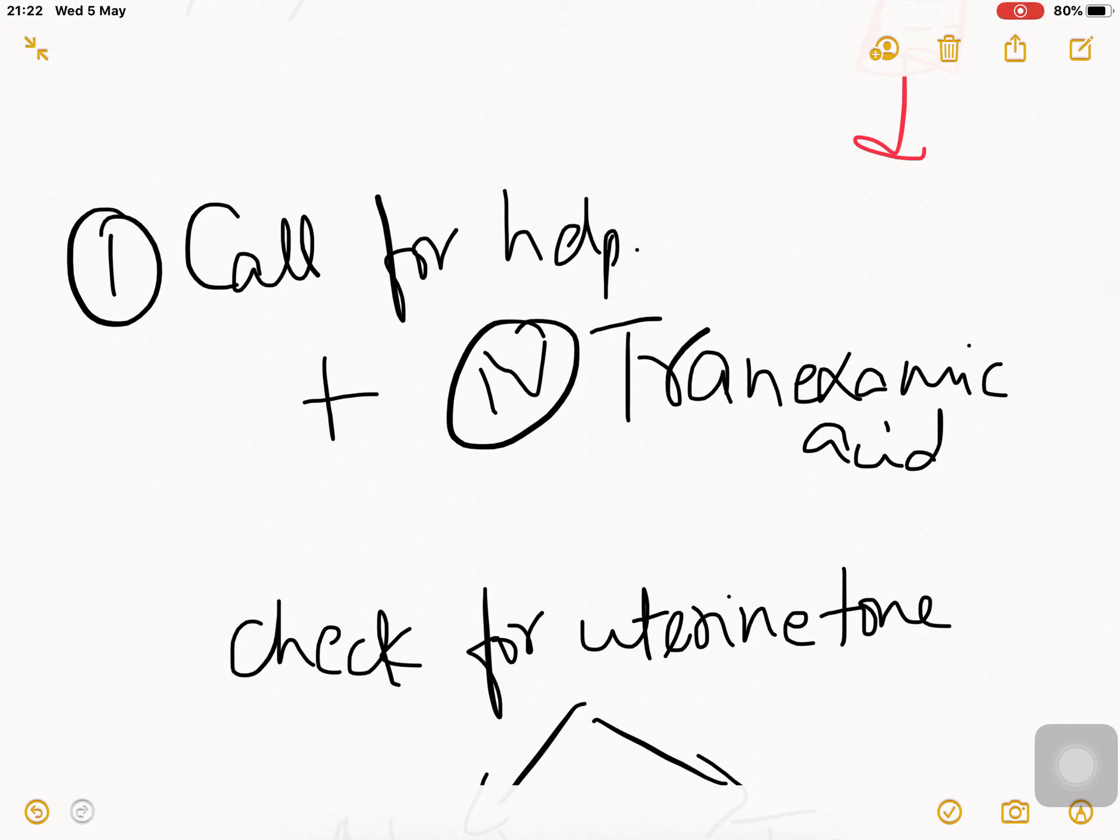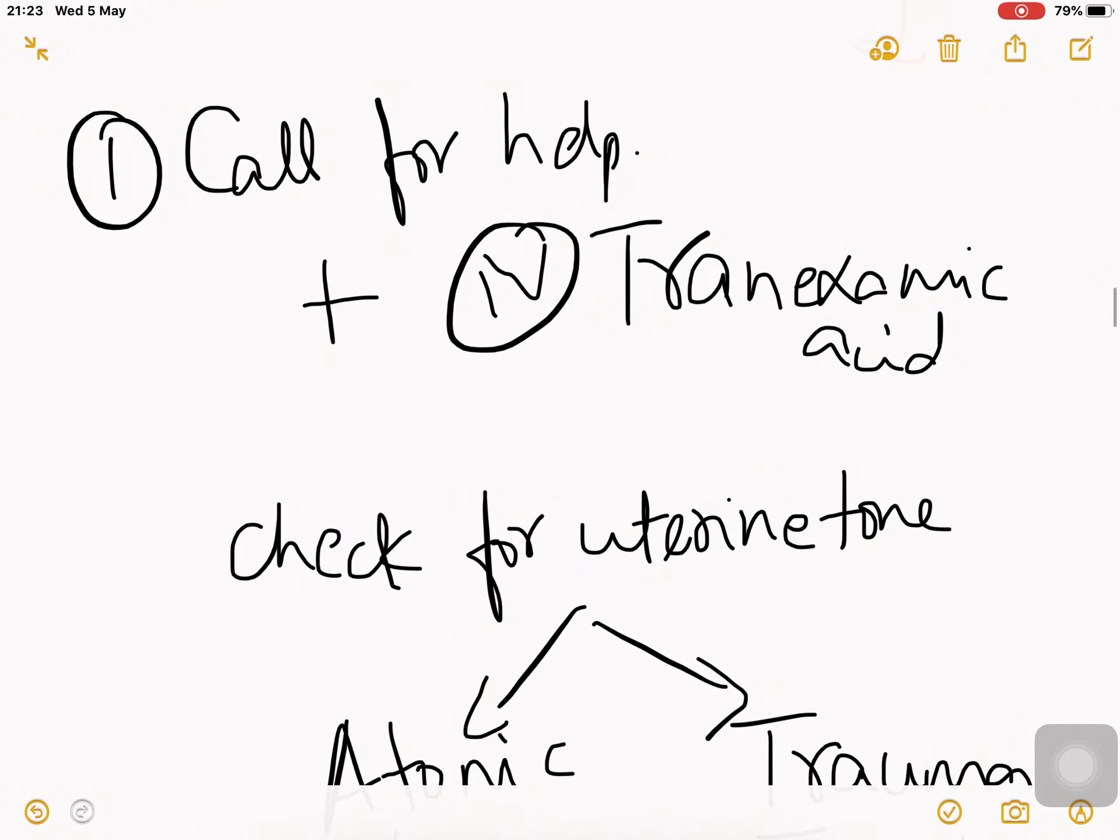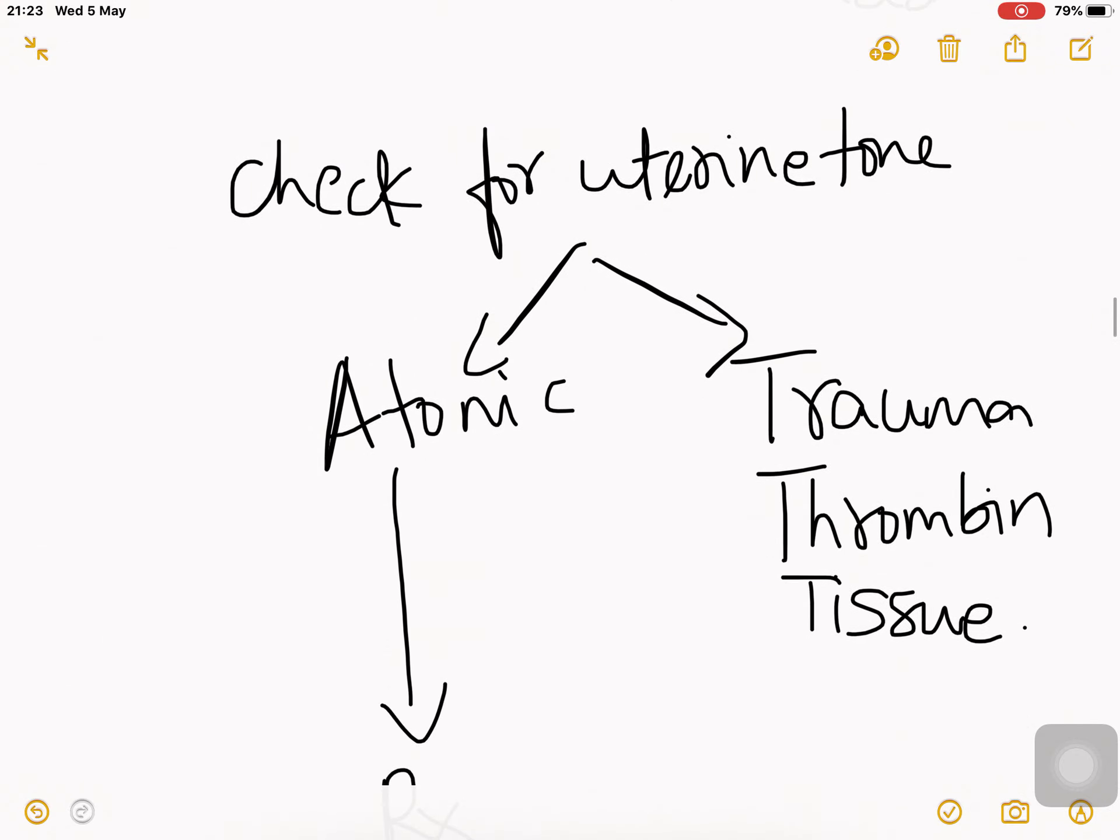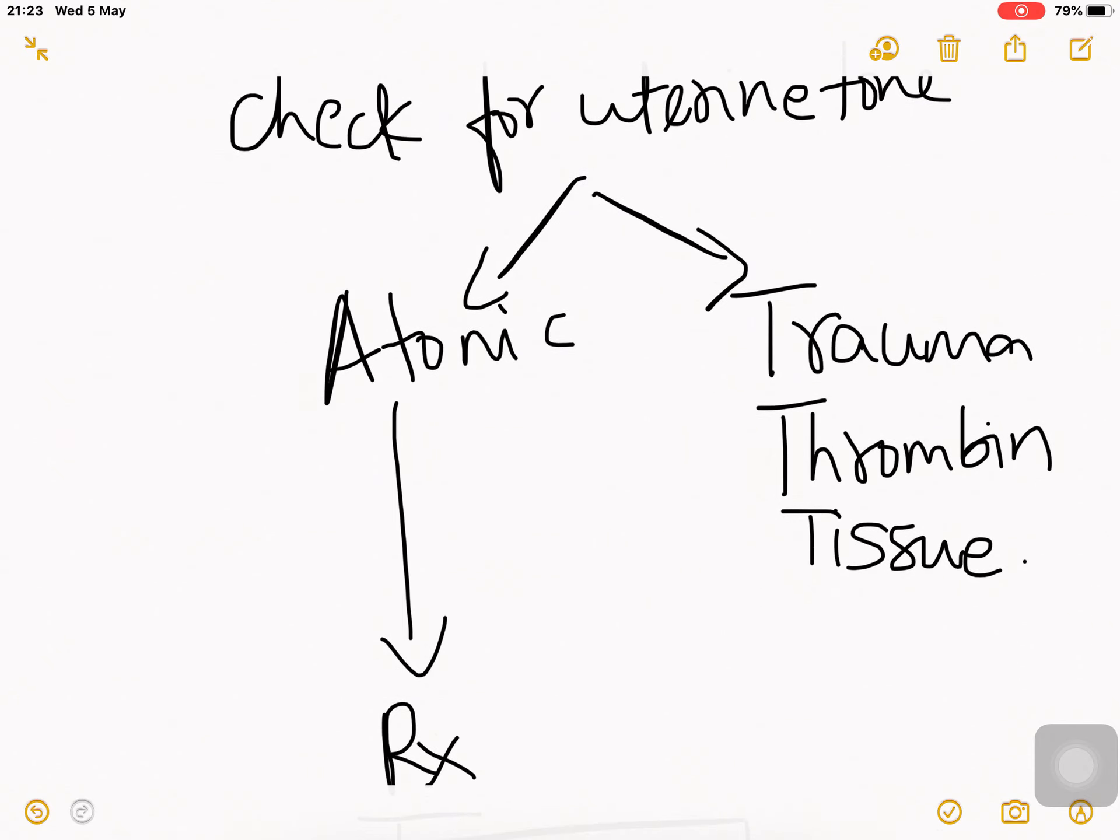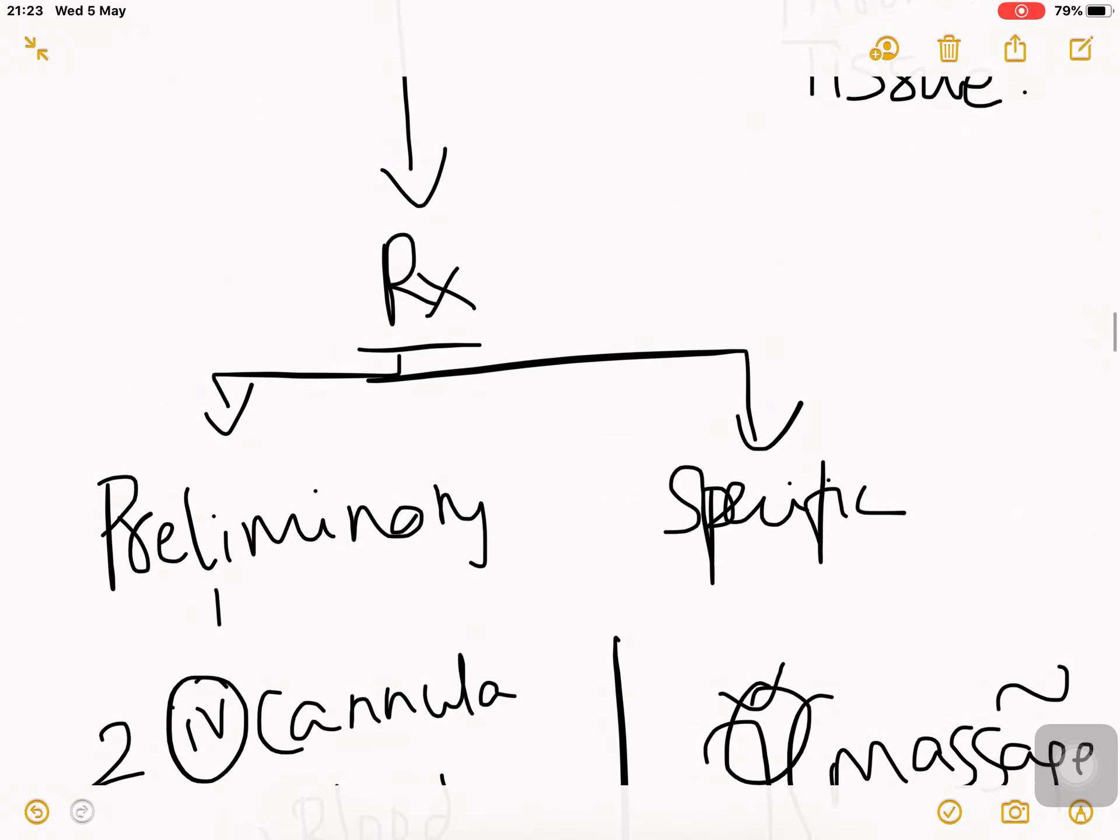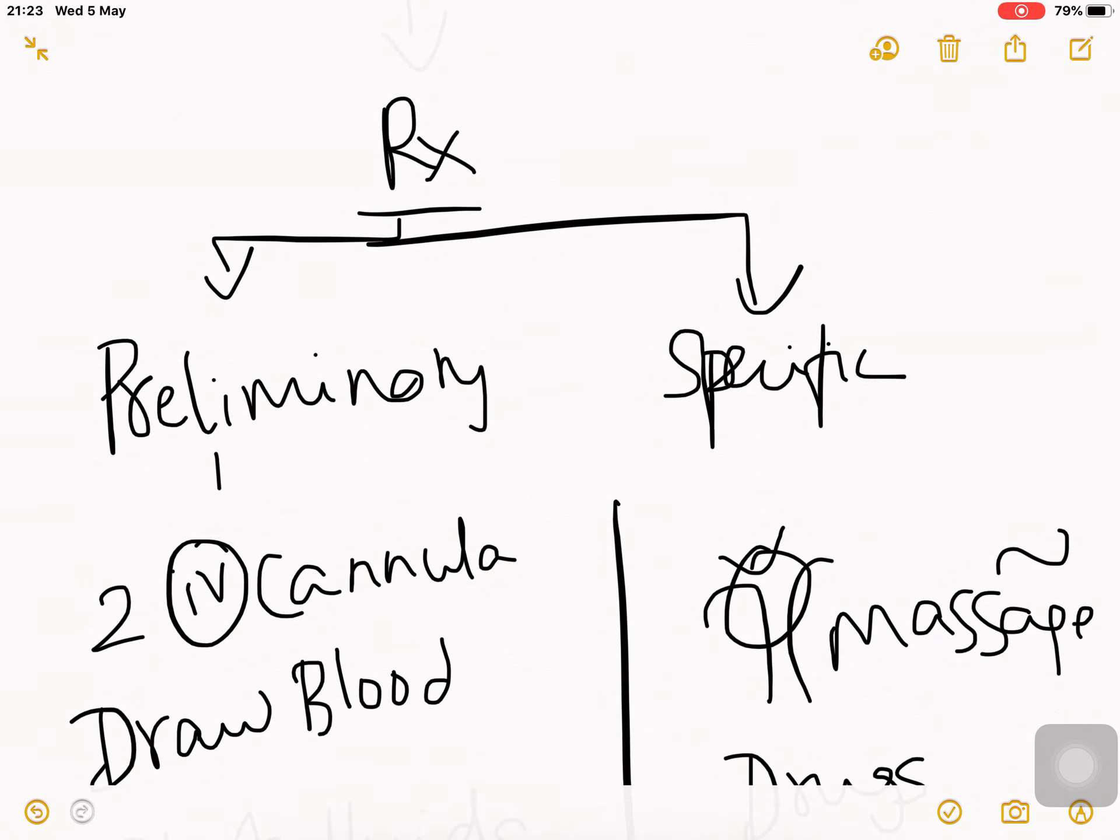The next step is to check the uterine tone. If the uterus is flaccid and very soft and not contracted at all, it's atonic PPH, which occurs in 90 percent of PPH cases. Otherwise it can be trauma, thrombin, or tissue like retained placenta.